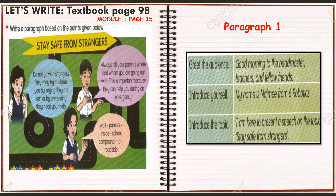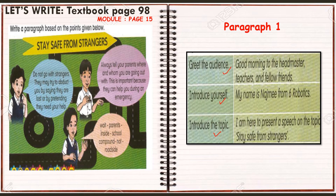Now let's try to write a speech on Stay Safe from Strangers. You may refer to your textbook and also your module. The topic is Stay Safe from Strangers, and you can look at the main points that you need to elaborate. For the first paragraph, you need to greet the audience, introduce yourself, and introduce the topic. Good morning, Headmaster, teachers and fellow friends. My name is Najmi from Six Robotics. I am here to present a speech on the topic: Stay Safe from Strangers.